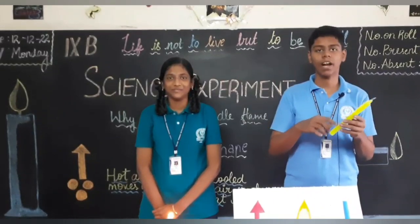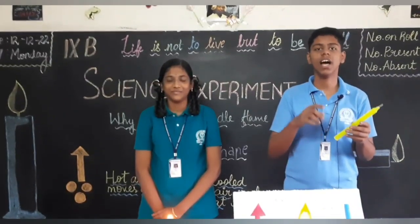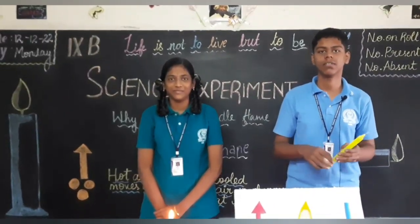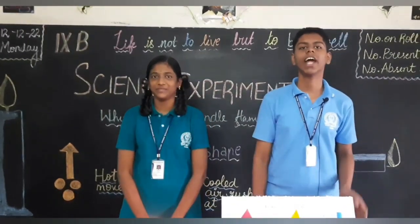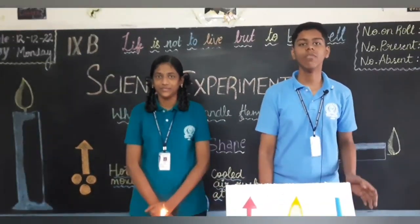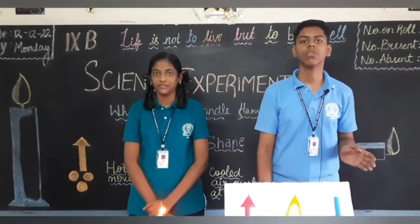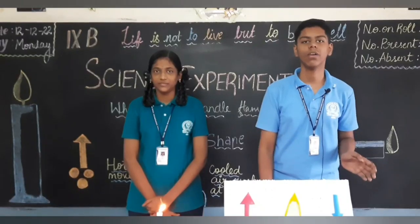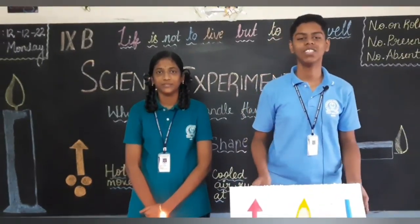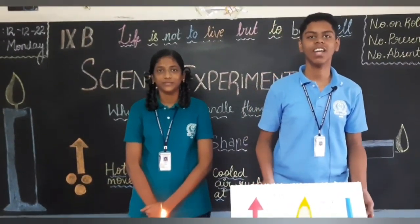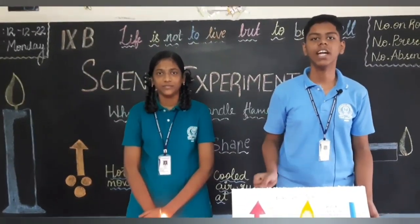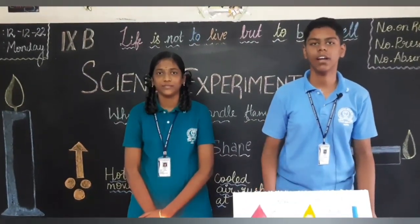Most candles are made up of paraffin wax, which is a hydrocarbon made up of carbon and hydrogen. When we light the candle, the flame heat melts the wax around the wick. The heat vaporizes the liquid wax and breaks down the hydrocarbon into carbon and hydrogen. These molecules react with the oxygen present around and produce heat, light, carbon dioxide, and water vapor.